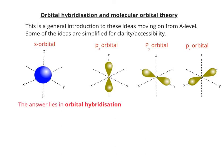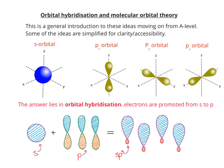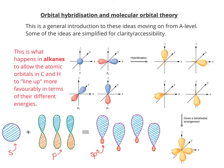The answer comes from a concept called orbital hybridisation. What happens is electrons are promoted from S orbitals to P orbitals. For a relatively small injection of energy from the atom, you get a more stable arrangement of the electrons, where their situation in the energy level scale means they can line up more effectively. This is what happens in alkanes to allow the atomic orbitals in carbon and hydrogen to line up in terms of their different energies, and this is called SP3 hybridisation.